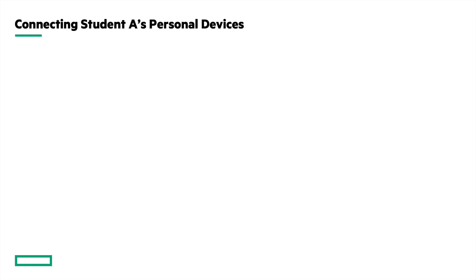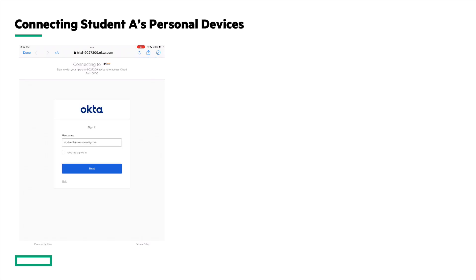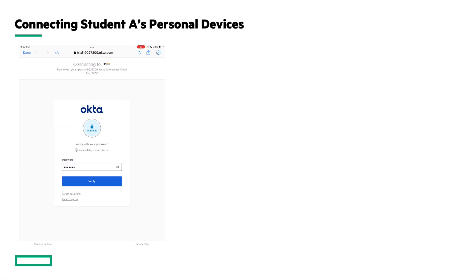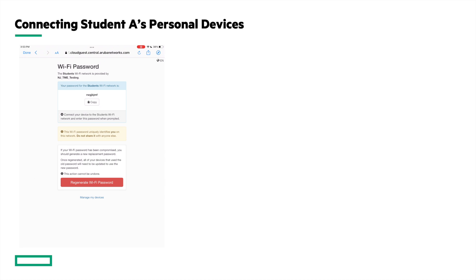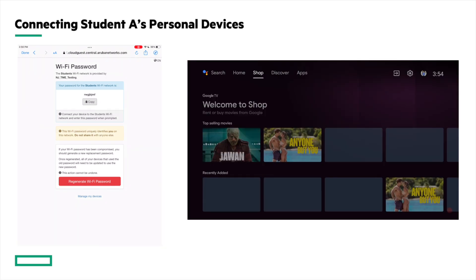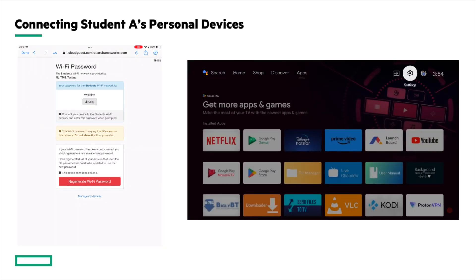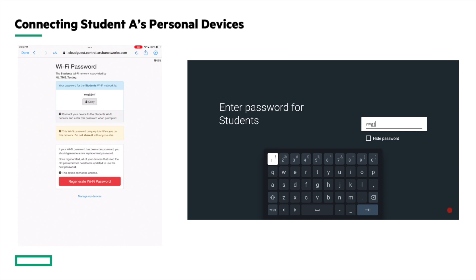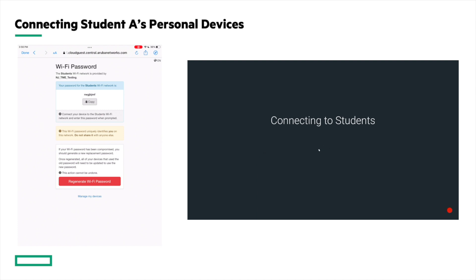Let's connect Student A's personal devices. Student A needs to log in to the cloud guest portal and generate a pre-shared key. On the iPad, I log in using Student A's credentials — student A at xyzuniversity.com — and type in the password. Here you can see the generated pre-shared key on the cloud guest portal. You also have an option to regenerate it. Now using this pre-shared key, Student A can connect the Google TV. Type in the pre-shared key and it's connected.